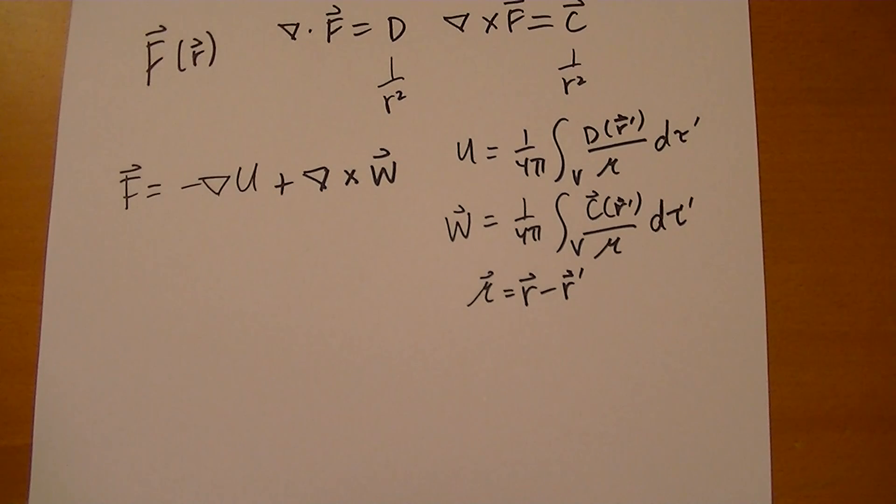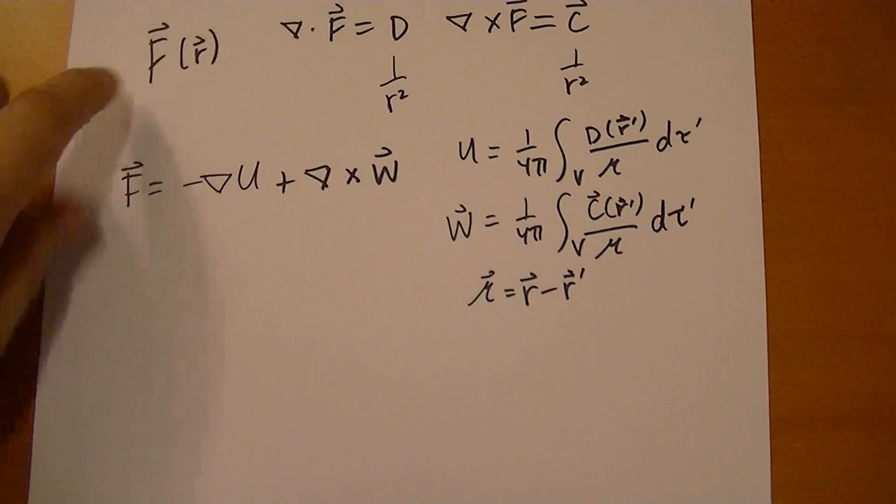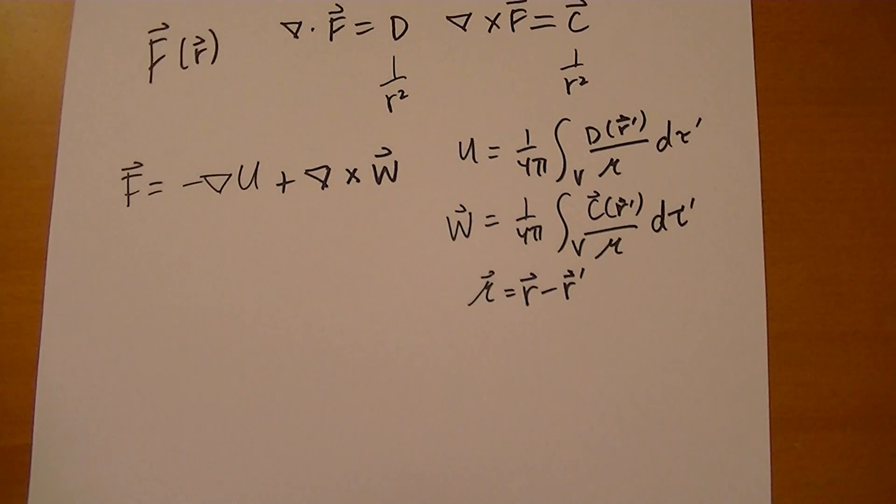That's basically the Helmholtz theorem. The interesting corollary is that if you have a differentiable function F of R which goes to 0 faster than 1 over R as R approaches infinity, then you can always express it as the gradient of a scalar and the curl of a vector.